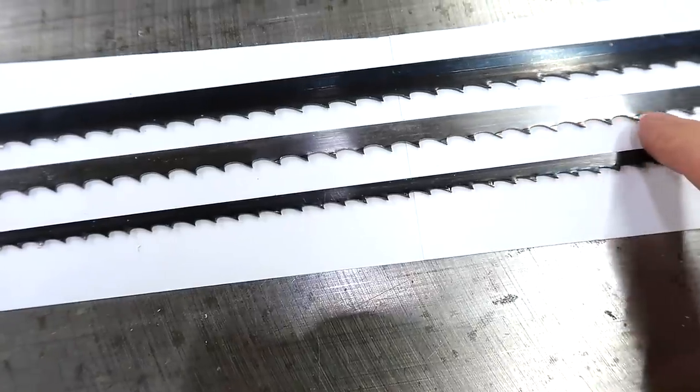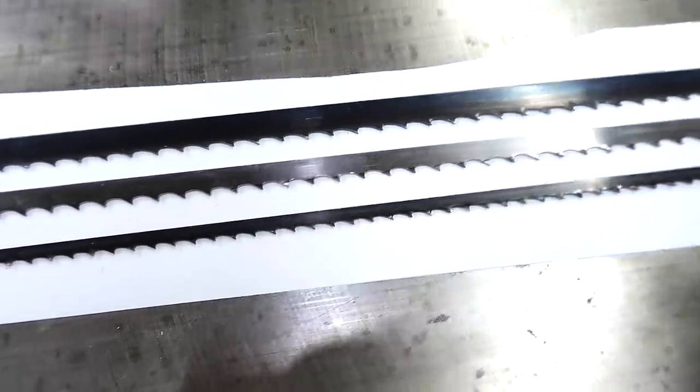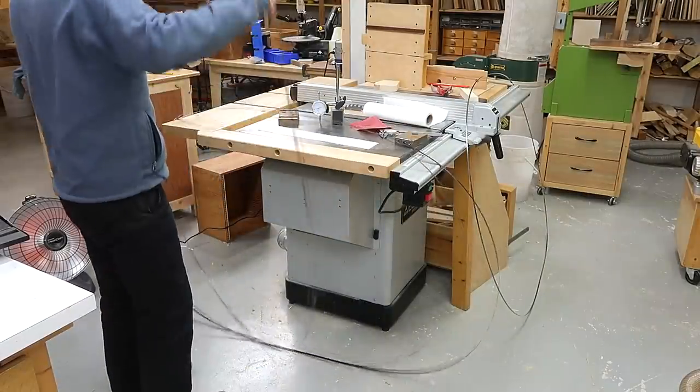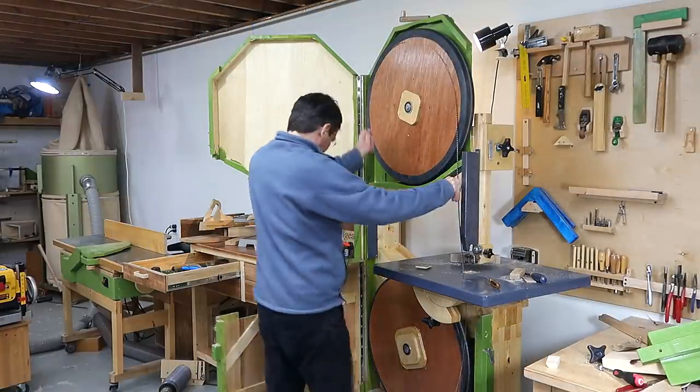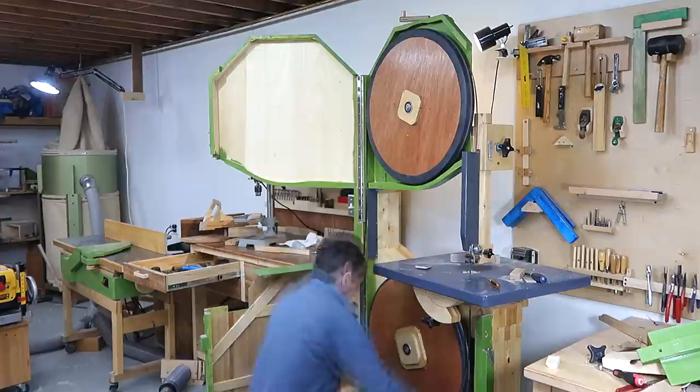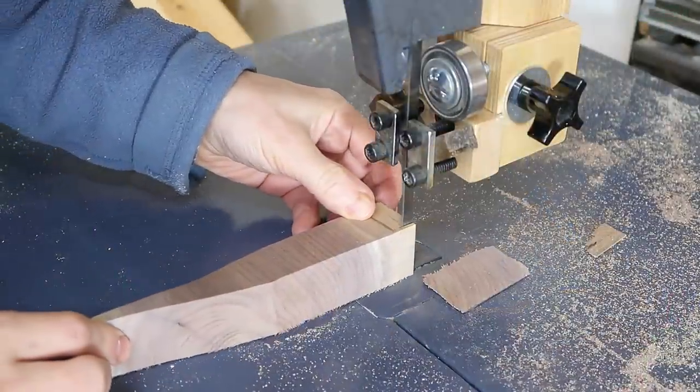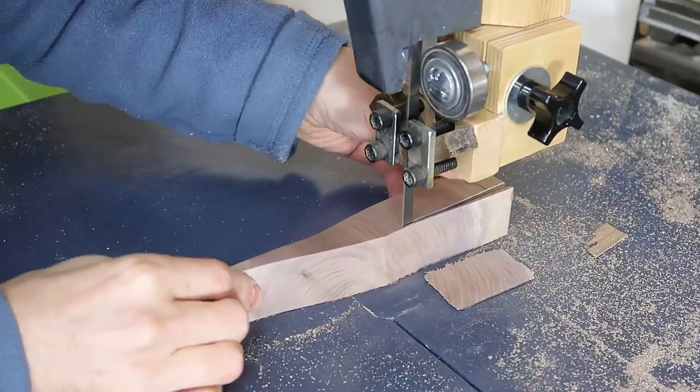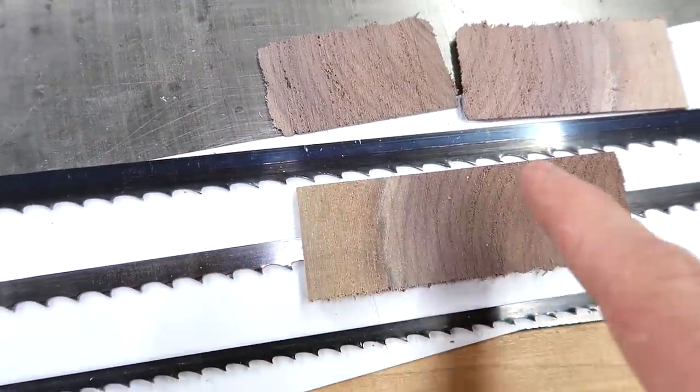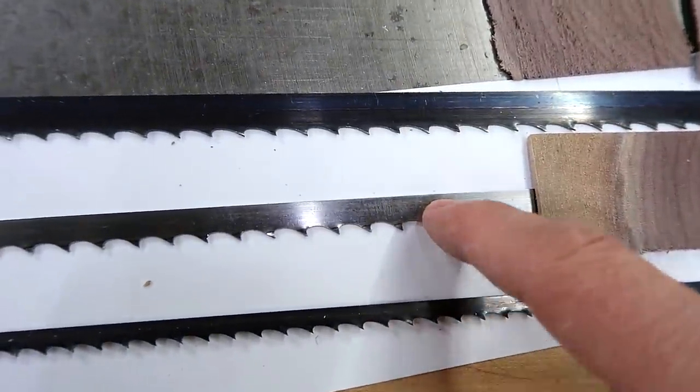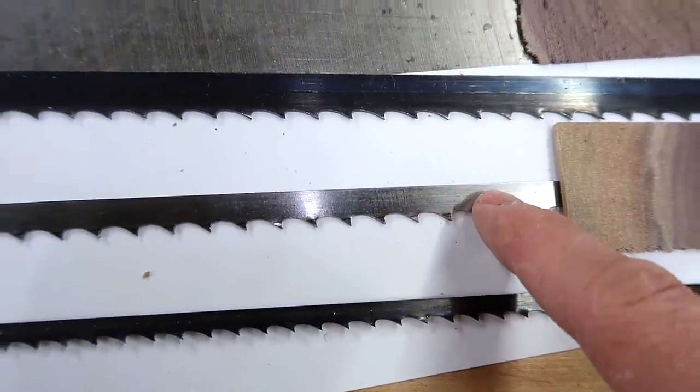But this blade that just arrived in the mail cuts much smoother, even though it looks not that different from the other blades. These cuts were made with this blade, and this cut with this new blade. These are both 3 TPI blades and about the same tooth shape.